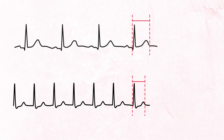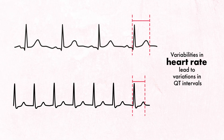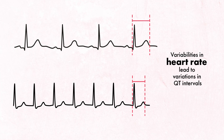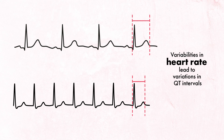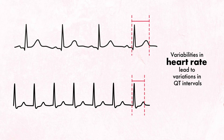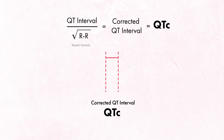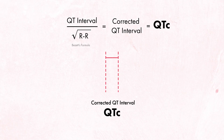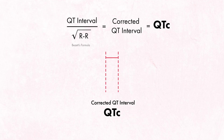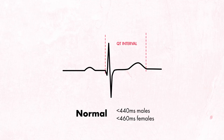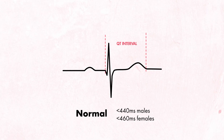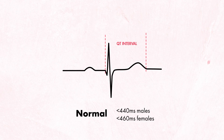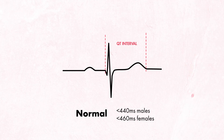Because this interval varies with heart rate, we often account for this variability by calculating a corrected QT interval, or QTc for short. Normally, the QTc is less than 440 ms in males and less than 460 ms in females.